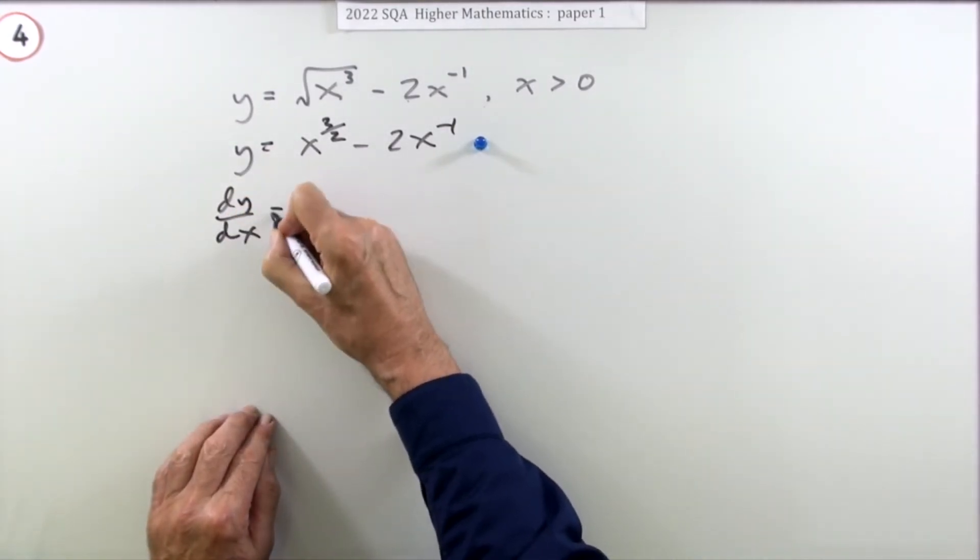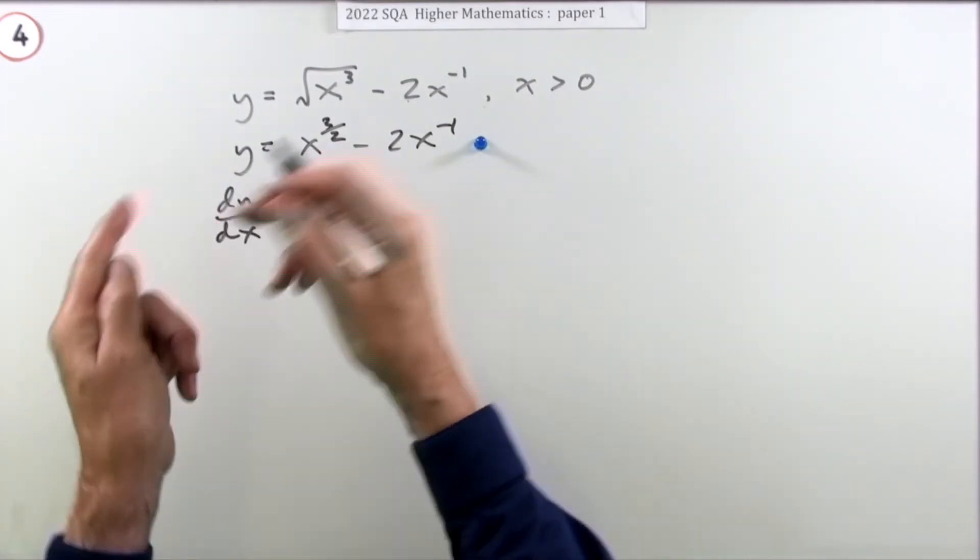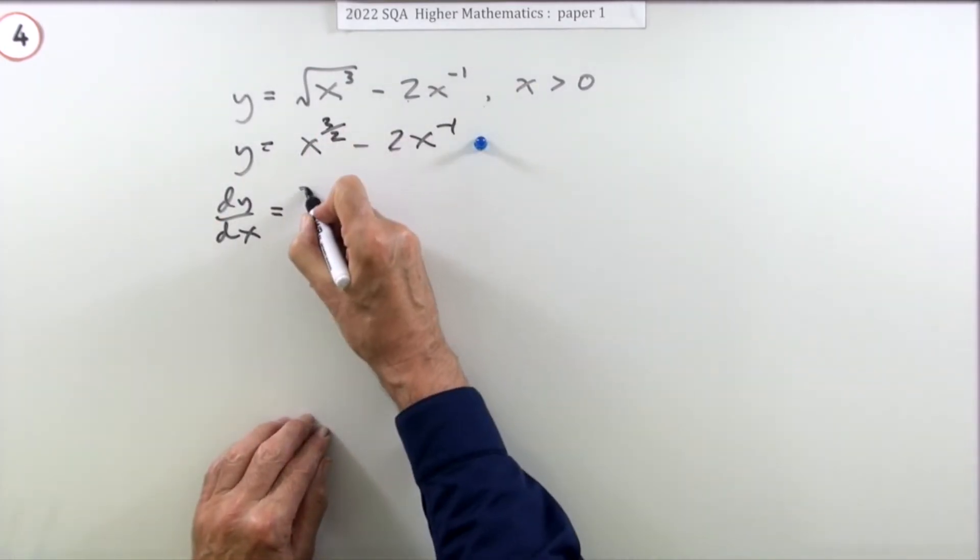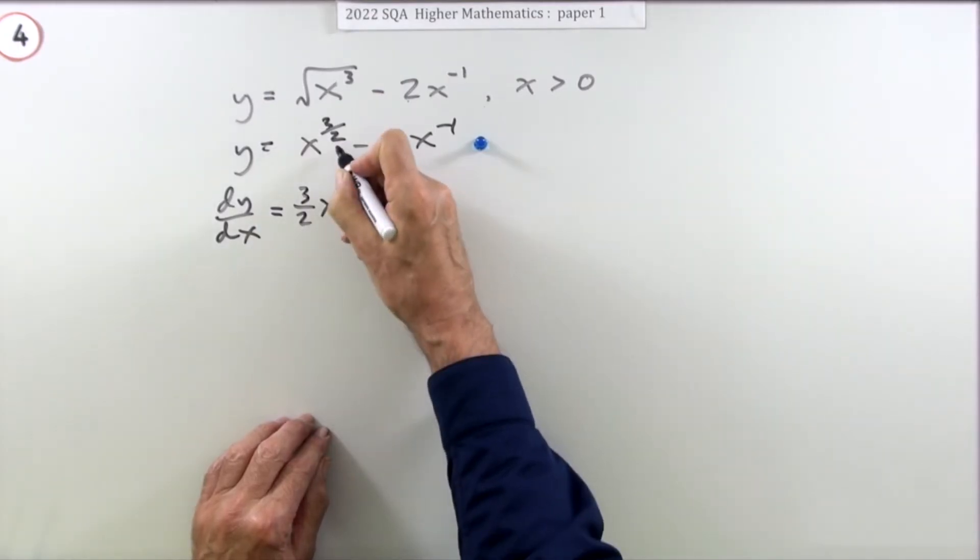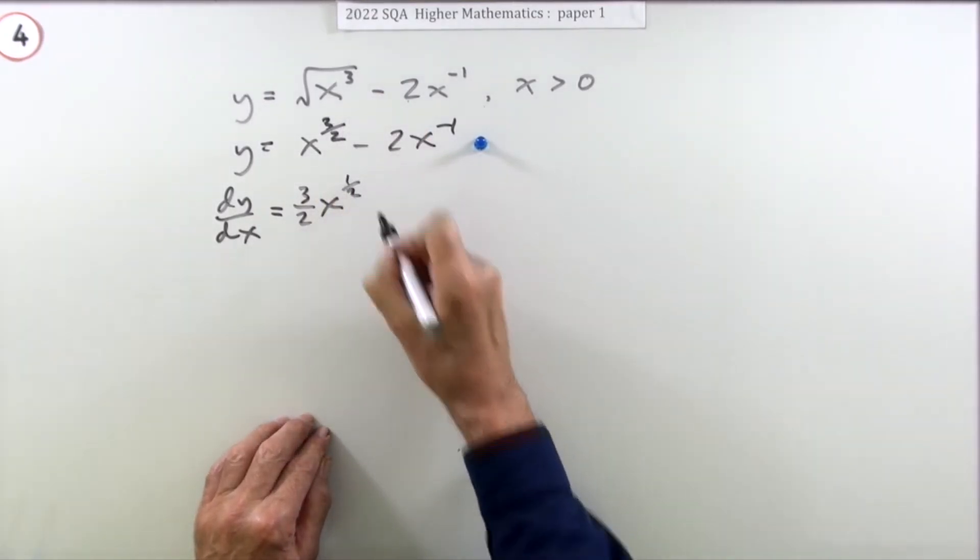So differentiating, which as you know is trivial because all you do is multiply by the power and take 1 off the power. So multiplying by the power will be 3 upon 2 times it. Take 1 off the power. 1 off of 3 upon 2 leaves 1 upon 2.